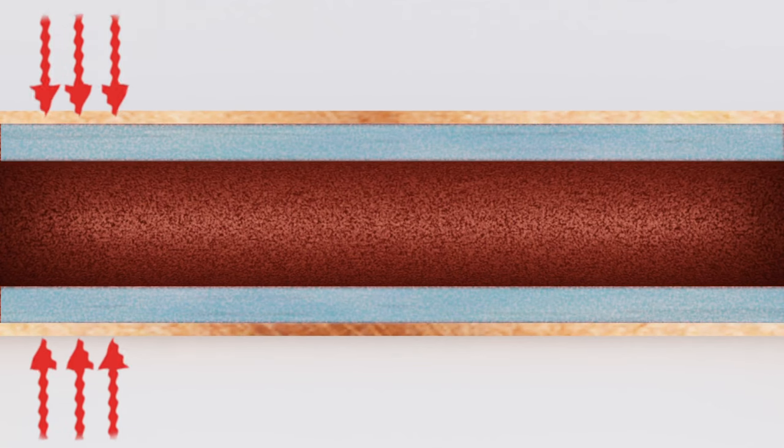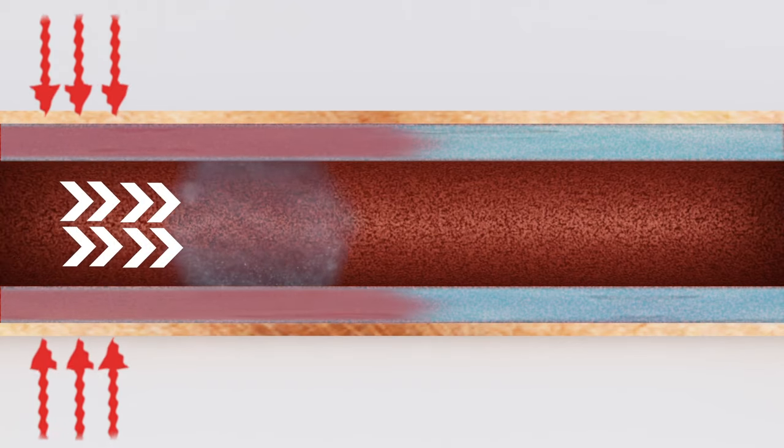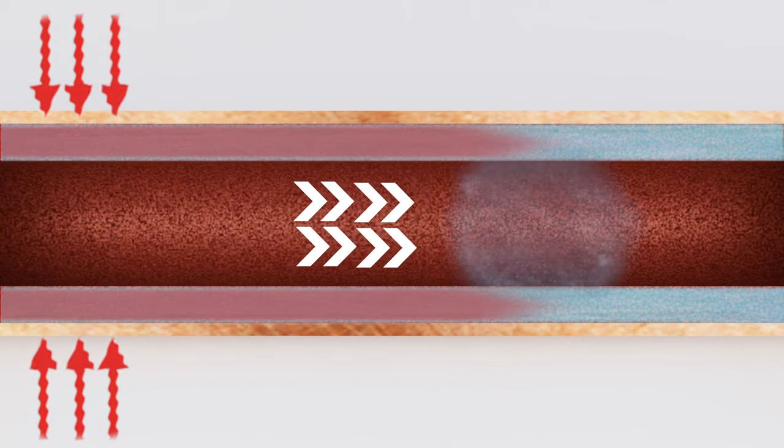During operation, heat is input in what is known as the evaporator. The heat boils the fluid and pushes the fluid vapor to the colder region of the heat pipe.